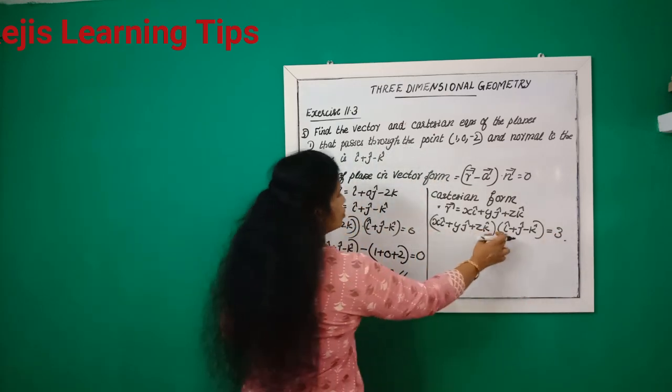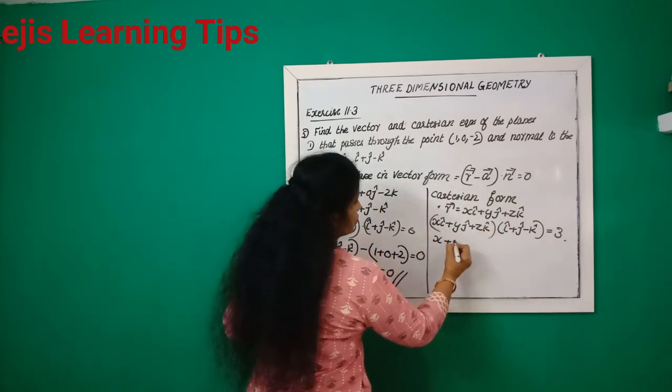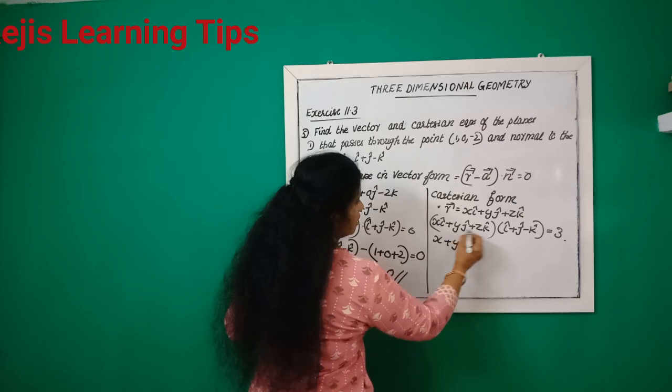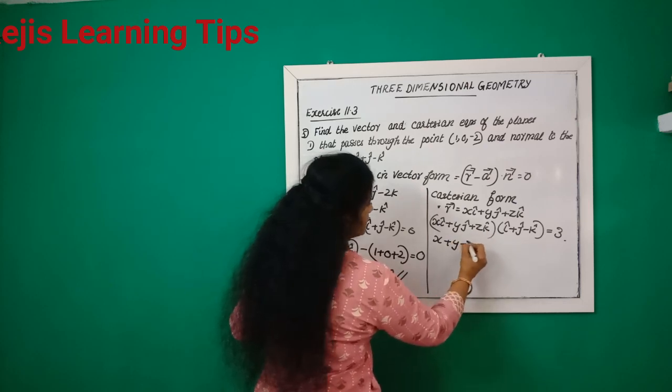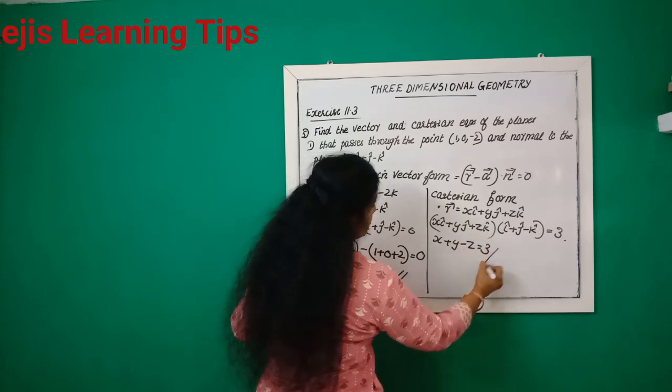x into 1, that gives x plus y minus z is equal to 3.